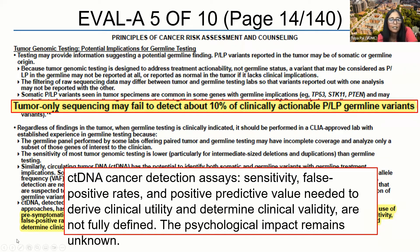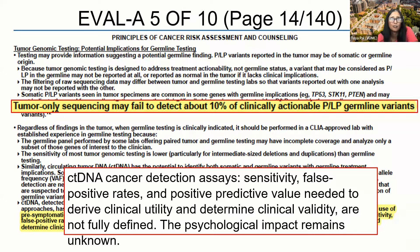We also highlighted that circulating tumor DNA is a rapidly evolving field. We noted that sensitivity, false positive rate, and positive predictive value are needed to derive clinical utility and determine clinical validity. Because these are not fully defined at this point, and there is potentially some psychological impact which remains undefined, we are bringing caution to this area. It has potential to be beneficial right now, but we just don't know enough.